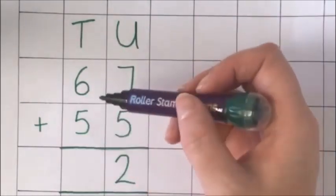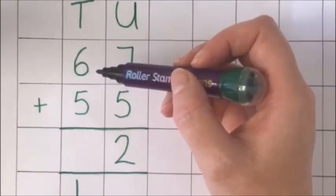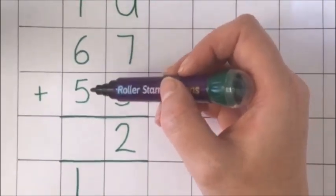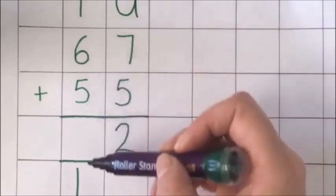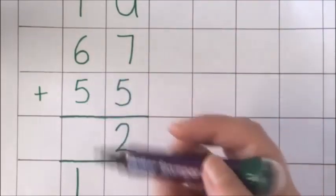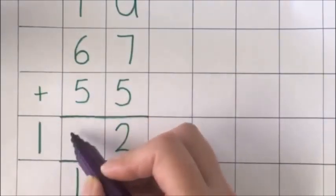Then I can add the rest of the tens. 6 tens and 5 tens makes 11 tens, and this 1 ten from earlier makes 12 tens. And I can write that like so. 122.